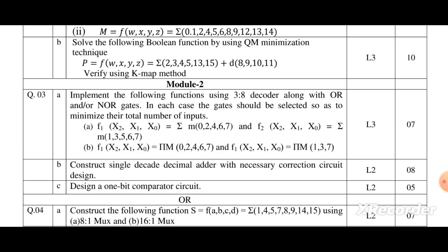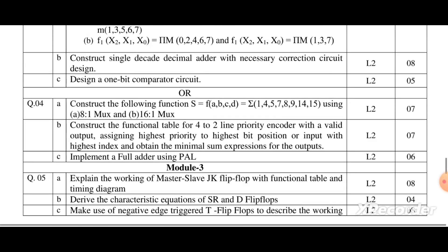This is 3b. In 3c again we see a comparator. A 2-bit comparator is asked in model question paper 1, now 1-bit comparator circuit is asked in a choice question in module 2.